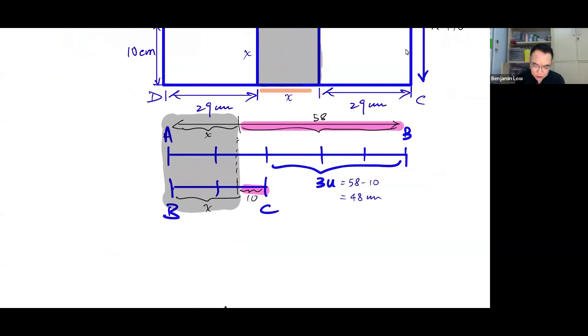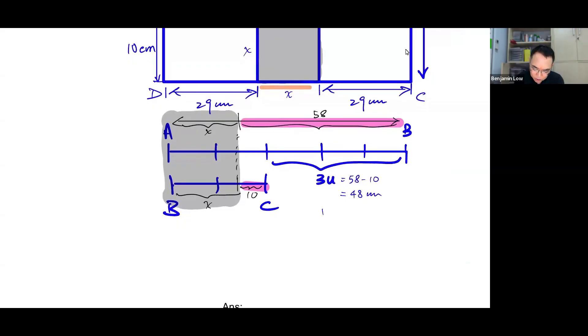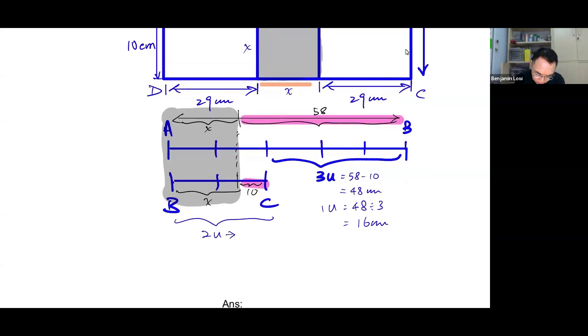So from here, naturally, the next thing we can do is we can find 1 unit, which is 48 divided by 3, which is 16 cm. Okay? So if we know that 1 unit is 16 cm, then we will also be able to find out how much is 2 units. So 2 units will be 16 cm times 2, which is 32 cm.